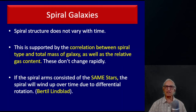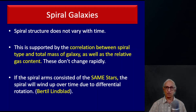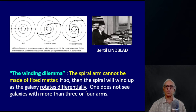If the spiral arms consisted of the same stars — say, numbered 1 through 10 to the power 9 — then the spiral would wind up like the spring of a clock over time due to the differential rotation of the galaxy. This was first pointed out by the Swedish astronomer Bertil Lindblad.